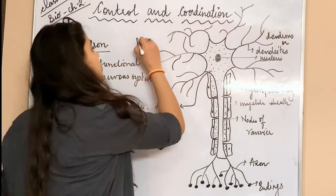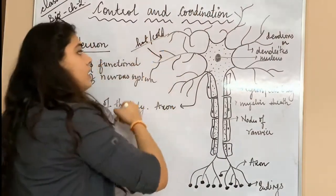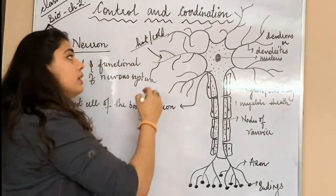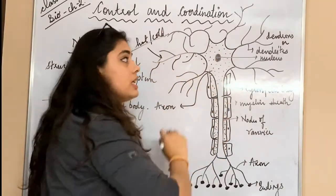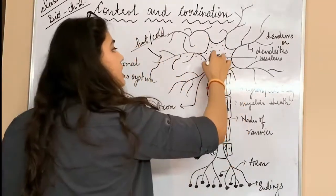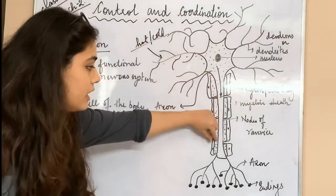For example, if you are touching anything hot or cold, very cold, then you touch it and there is a signal. Here is the cell body, signal enters the cell body. Where will it go? The cell body, where will it go?